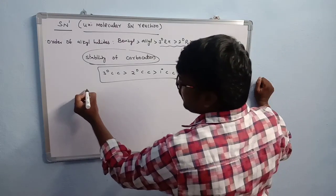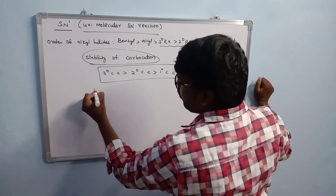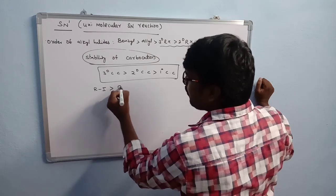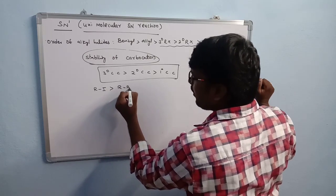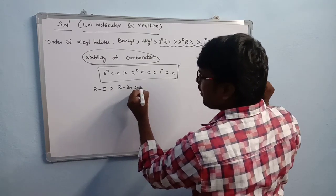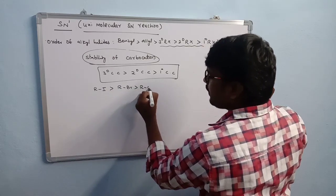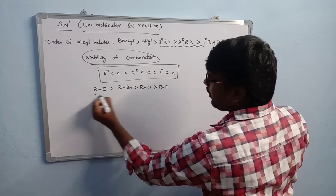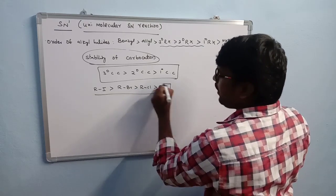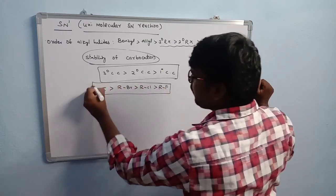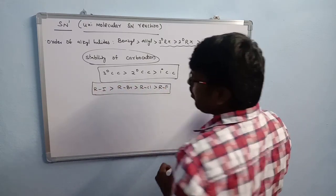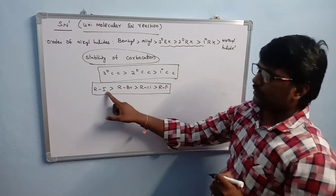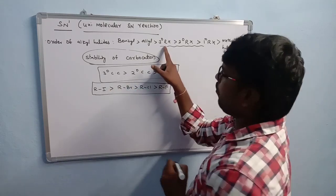With the same alkyl group, the reactivity order based on the halide is: RI > RBr > RCl > RF. With the same alkyl group, iodine gives the most reactive nature in SN1 reactions.